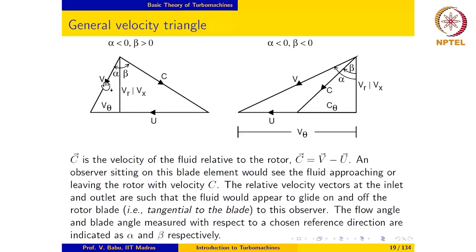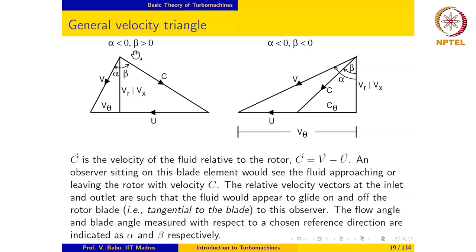Since the absolute velocity vector is in the clockwise direction from the reference direction by an angle alpha, this angle would be given a negative value. Alpha would be a number like minus 15 degrees or minus 30 degrees and so on. The angle beta, because it is in a counterclockwise direction from the reference direction, would be a positive number — something like plus 30 degrees or 60 degrees. So in this velocity triangle, alpha is less than zero and beta is greater than zero, which is why the triangle looks the way it does.